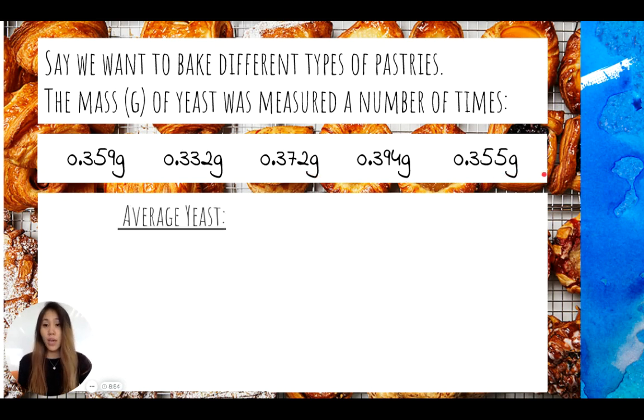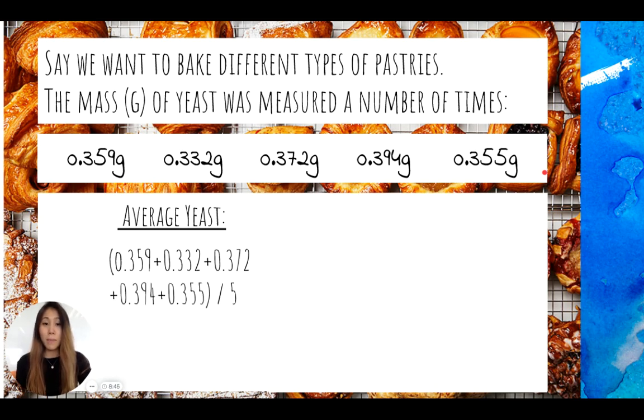So let's start with calculating the average yeast. The average yeast in this case would be adding up all five of the values and then dividing it by the total number of values that we have weighed. So we've weighed a total of five different yeast sets, and we get an average of 0.3624.